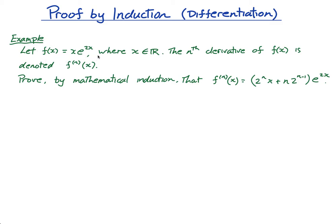This is actually a past paper question. We're given some function f of x, and it says the nth derivative is f_n of x. Prove by mathematical induction — there's no rule that it has to say that, but they almost always do — that the nth derivative is given by this. So if I was to differentiate this thing 10 times, the derivative would be 2^10 times x plus 10 times 2^9, all times e^(2x), which is interesting in itself, but we need to prove that.